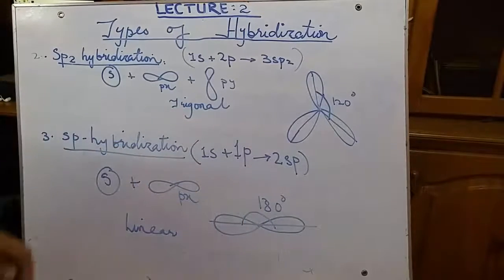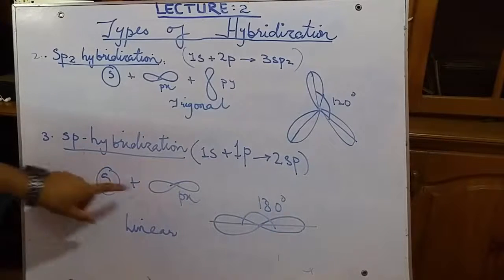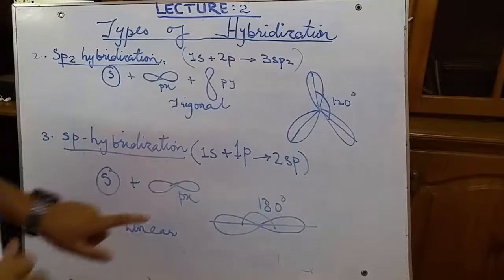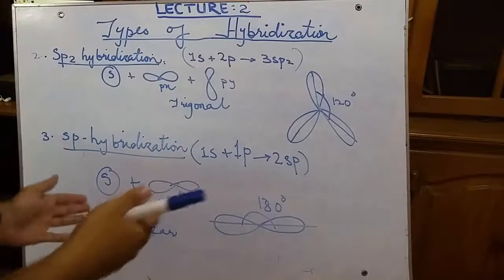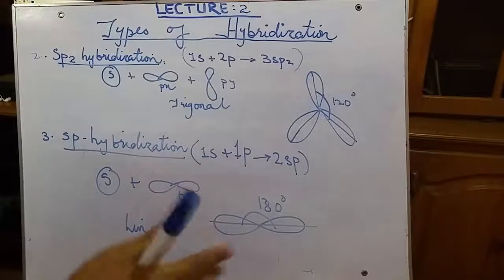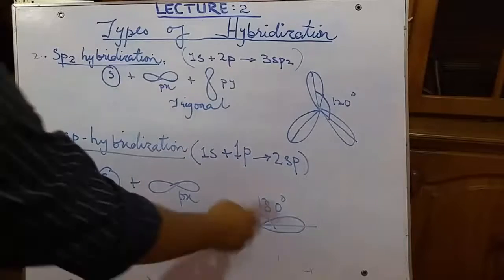There are two hybrid orbitals. It is one s and one px, not py nor pz. The shape as you can see is linear structure and the linear structure always has an angle of 180 degrees.